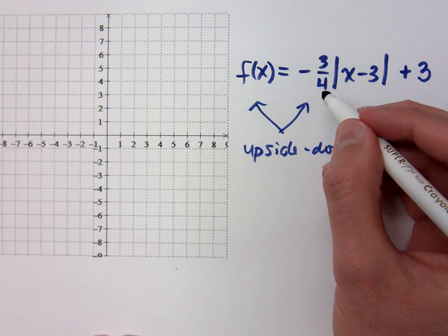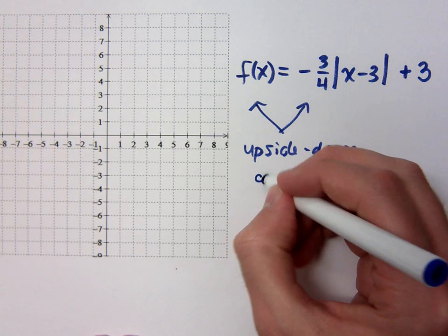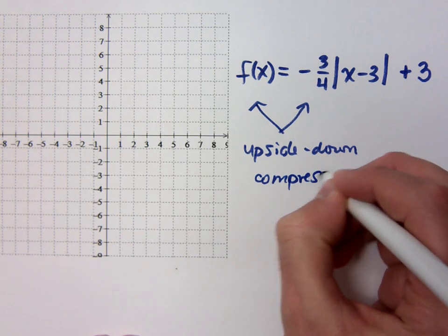What about that 3 fourths being multiplied times that? Is it a big compression or not a big compression? It's not much of a compression.